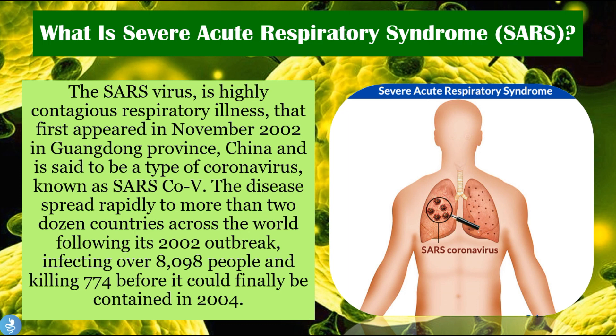So what is Severe Acute Respiratory Syndrome or SARS? The SARS virus is a highly contagious respiratory illness that first appeared in November 2002 in Guangdong Province, China, and is said to be a type of coronavirus known as SARS-CoV. The disease spread rapidly to more than two dozen countries across the world, infecting over 8,098 people and killing at least 774 people before it could finally be contained in 2004.